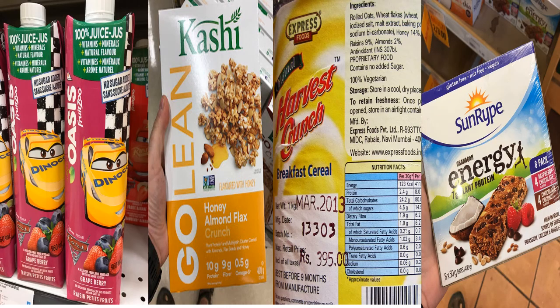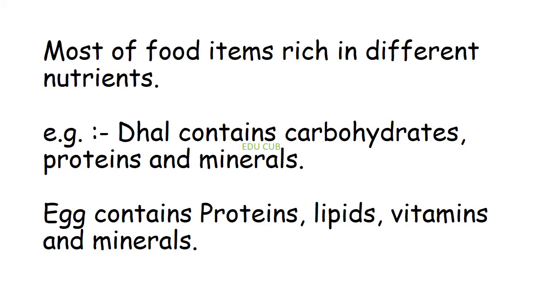The next activity is to observe labels on different types of food containers. Study the types of nutrients they contain and tabulate them. After doing this activity, you can observe that most food items are rich in different nutrients. For example, dal contains carbohydrate, proteins, and minerals; egg contains proteins, lipids, vitamins, and minerals.